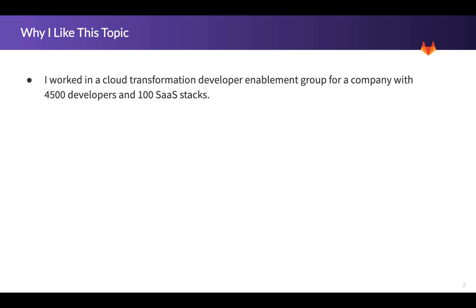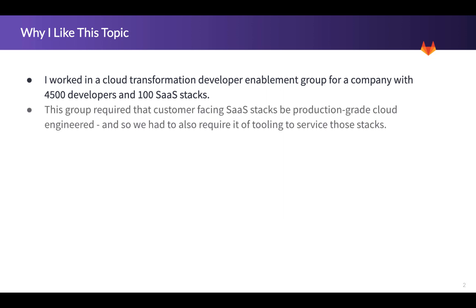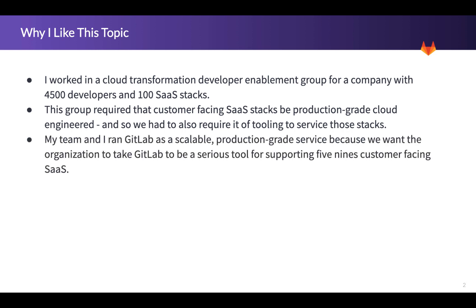I want to take a minute to talk about why I like this topic. Before I came to GitLab, I worked in a cloud transformation developer enablement group for a company with about 4,500 developers and a hundred stacks. Cloud transformation meant helping them lift into the cloud and eventually go to multi-tenant automation with software that had a variety of ages. We had to make sure everything lifted and shifted to multi-tenant was production-grade SaaS engineered, and any tooling we either built internally or provided as a service also needed to be production-grade. In order for GitLab to be taken as a serious production-grade service, it needed to be itself capable of supporting what the customers were requesting of those stacks.